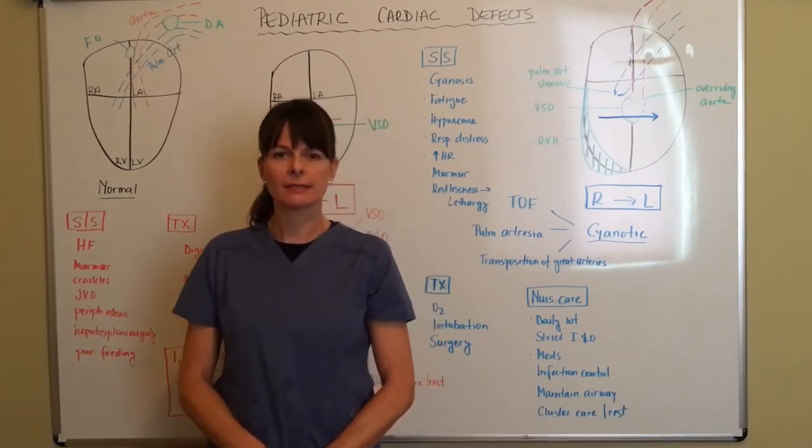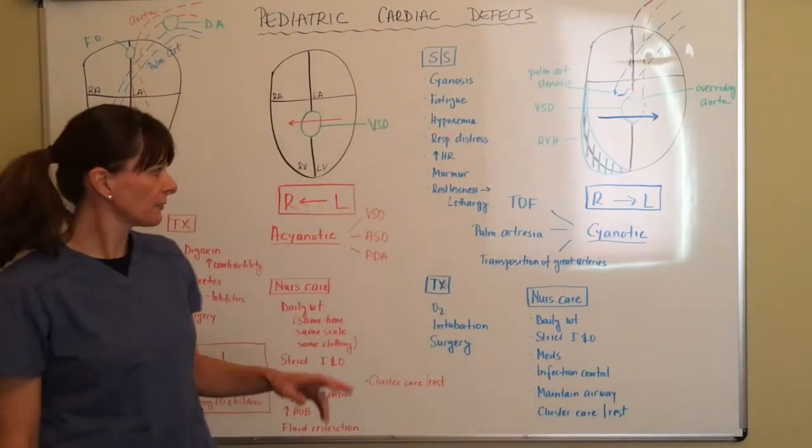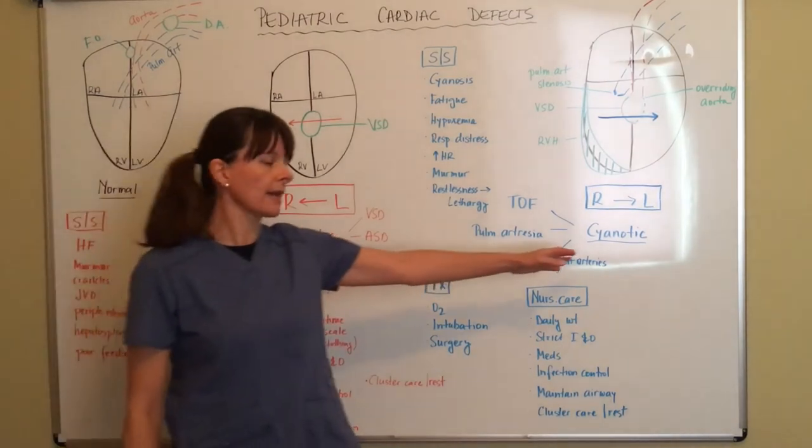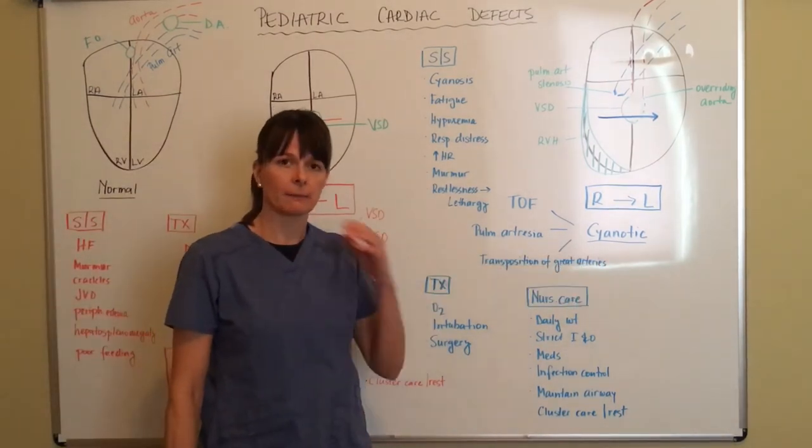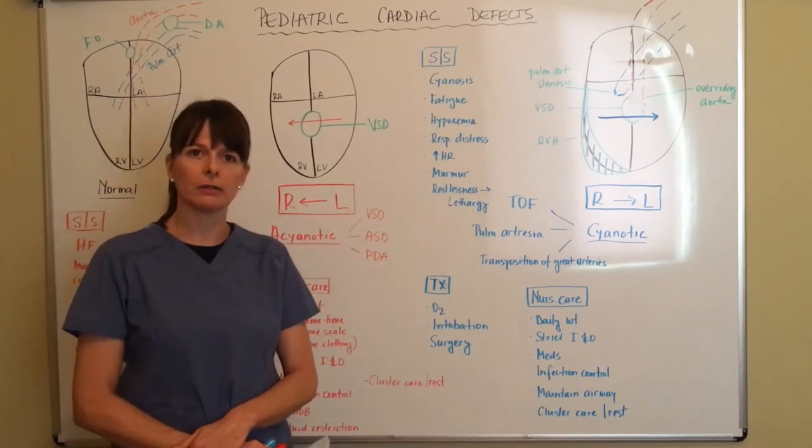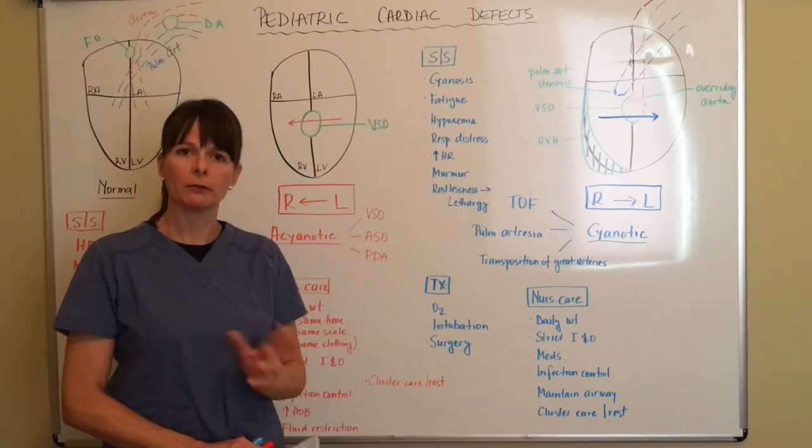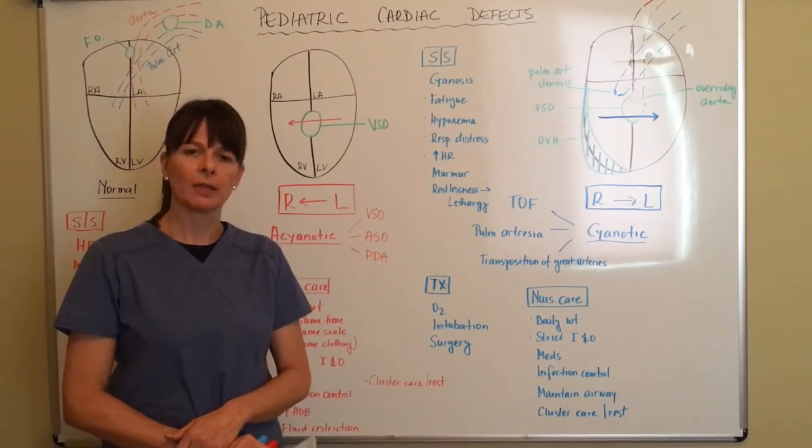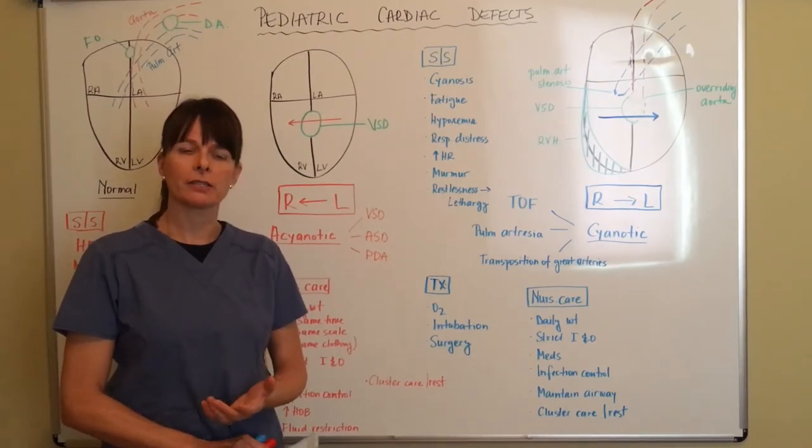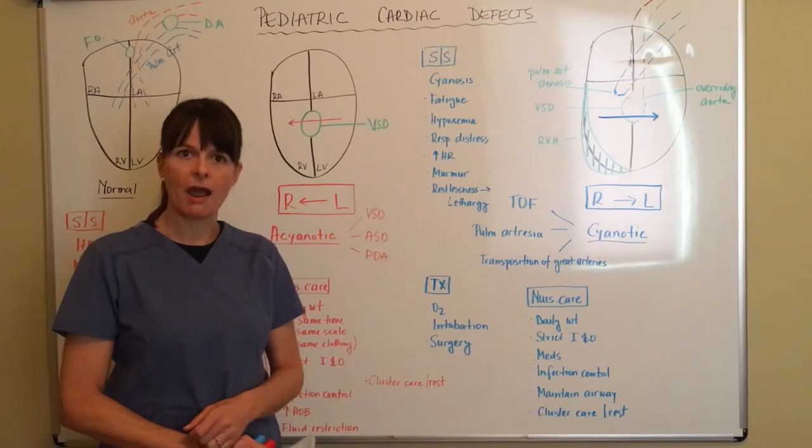I won't be discussing the particular specific defects, but I'll be discussing the difference between acyanotic and cyanotic differences. I find it very helpful if you really think about the structures of the heart and how the blood flows through the heart normally. And then if there is any abnormalities with the structure, then you can typically discern what kind of signs and symptoms the patient will have.